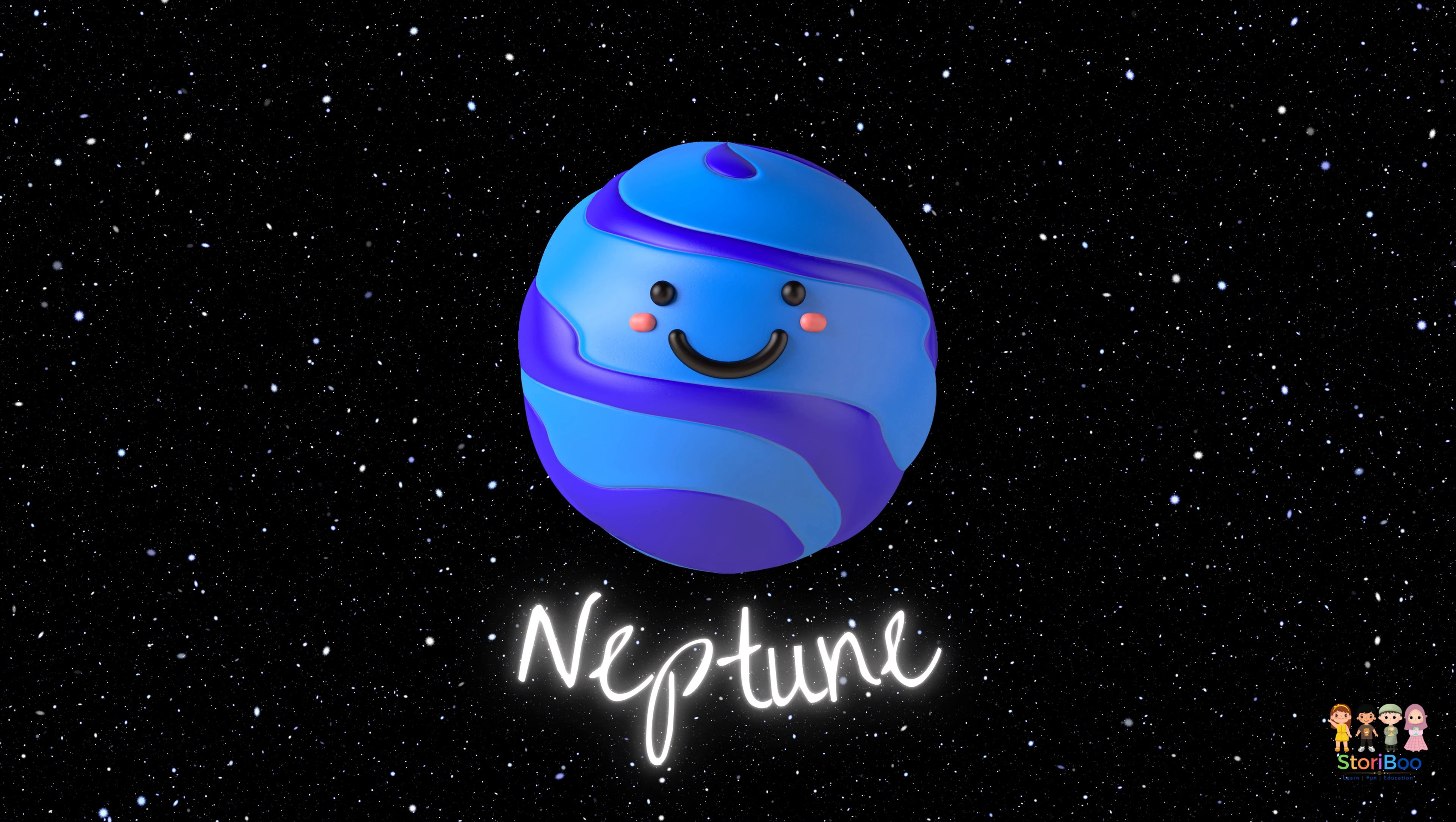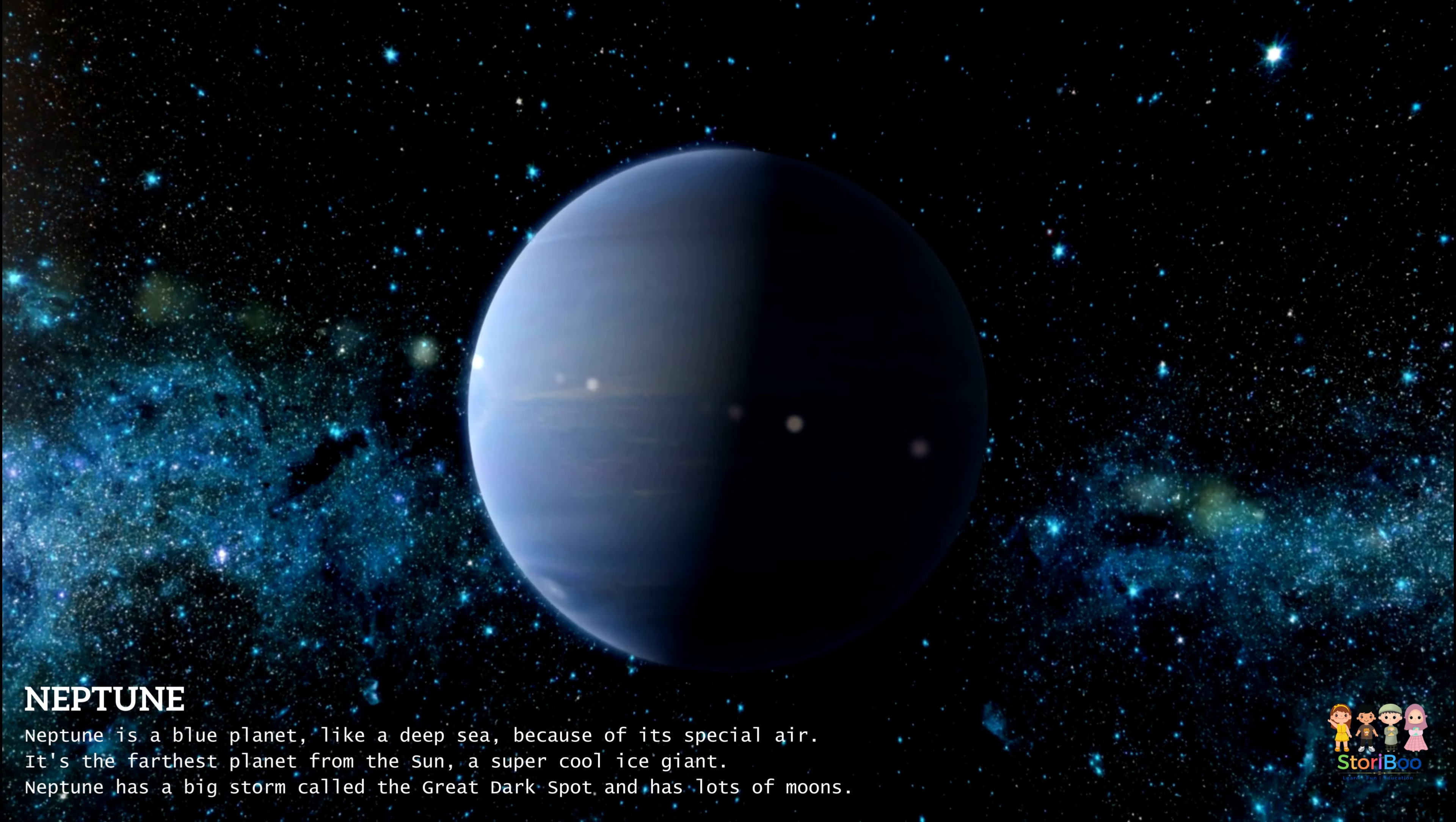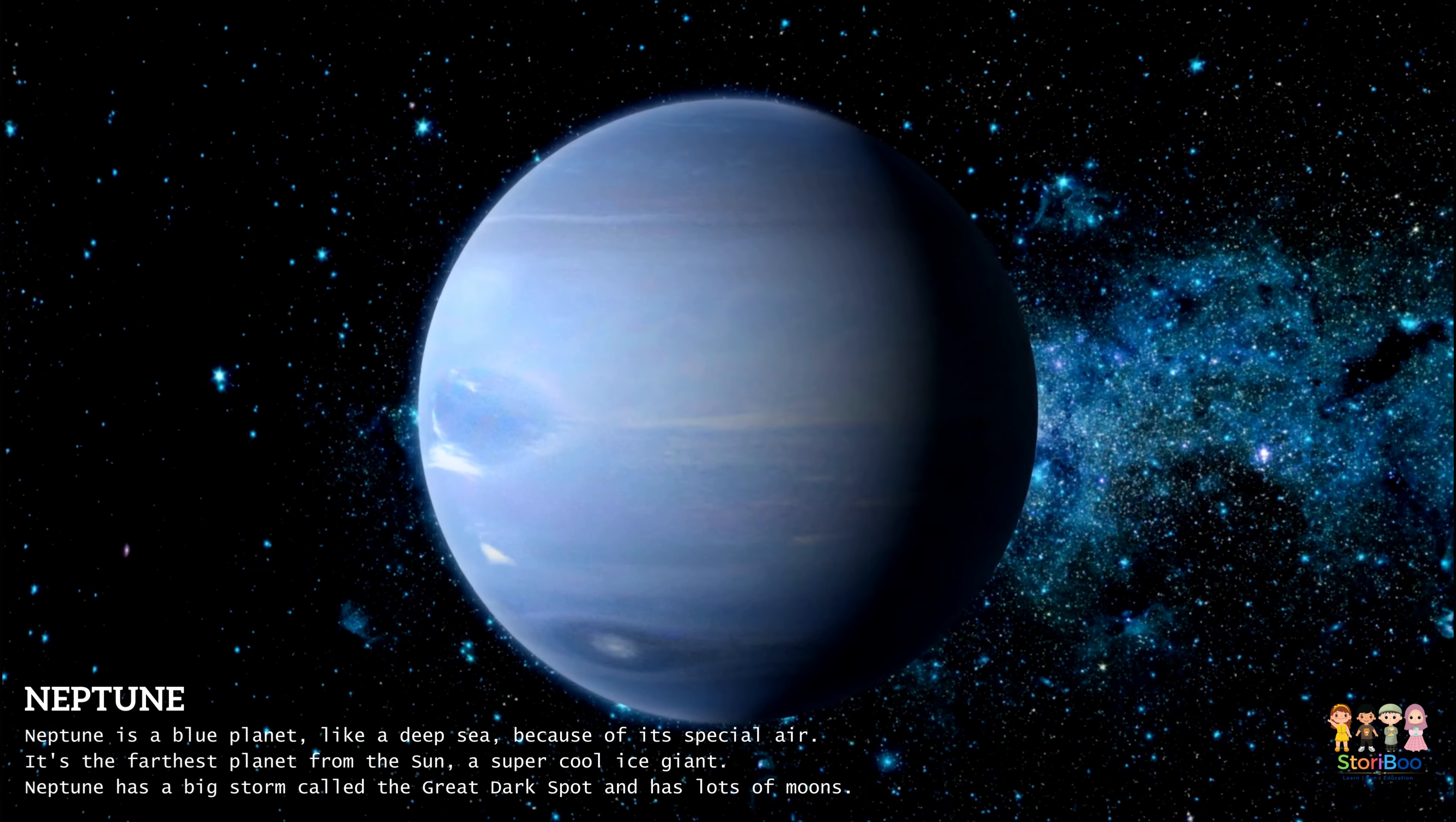Neptune is a blue planet like the deep sea because of its special air. It's the farthest planet from the sun, a super cool ice giant. Neptune has a big storm called the Great Dark Spot and has lots of moons.